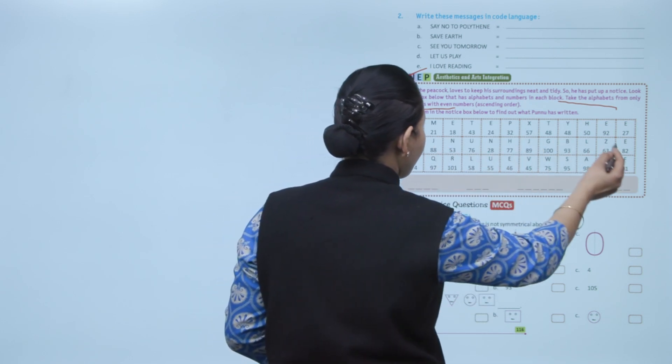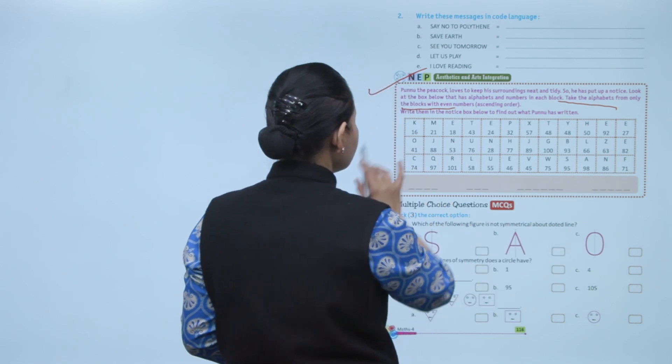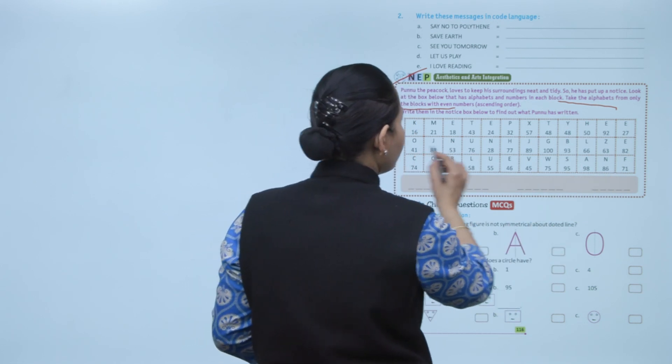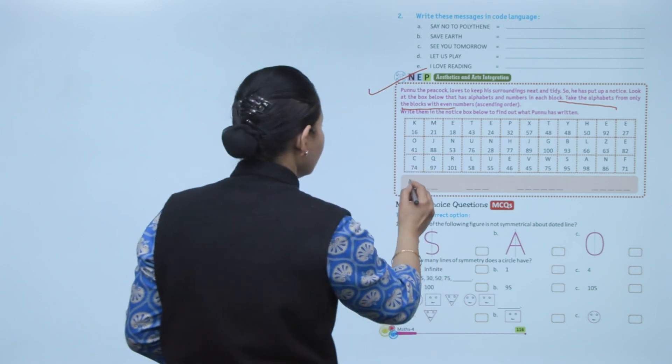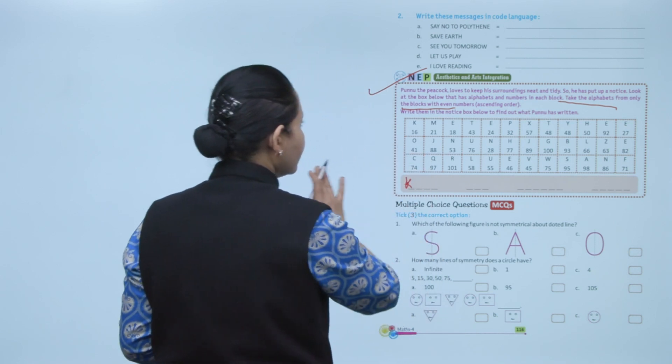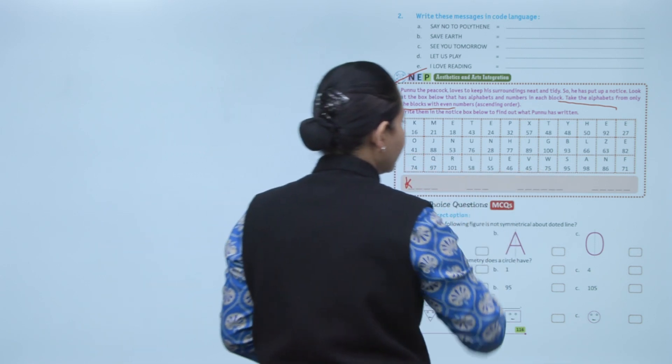16 is the smallest even number here, so we'll start with it. So first is K. Like this we'll write the alphabet and decode the message.